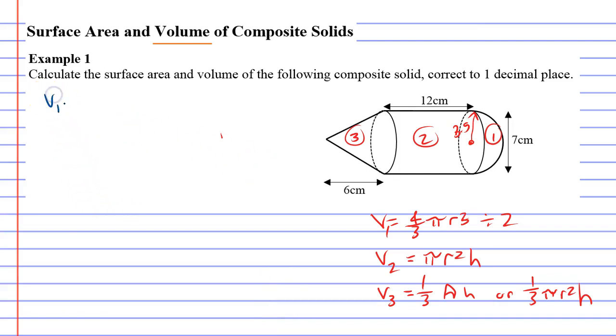Volume one, which is four-thirds times pi times r cubed. Now r is 3.5, so 3.5 cubed, and we're going to divide it by two at the end. Let the calculator do all the working out here. Four-thirds times pi times 3.5 cubed divided by two is, to one decimal place, 89.8 centimeters cubed.